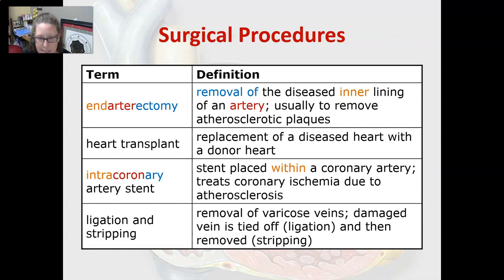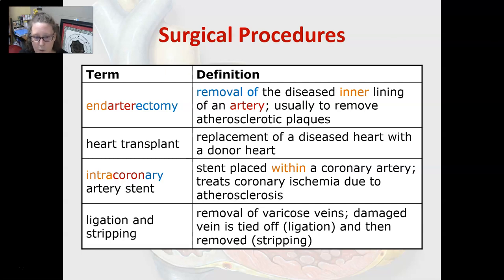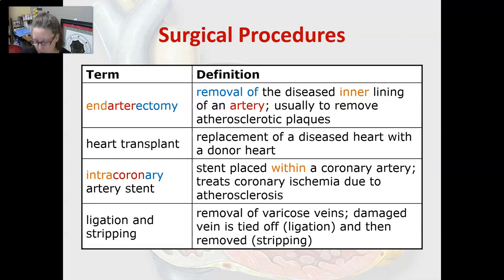An intracoronary artery stent is a stent placed within a coronary artery; it treats coronary ischemia due to atherosclerosis. Ligation and stripping is the removal of varicose veins or a damaged vein — the damaged vein is tied off, which is ligation, and then removed, which is stripping.